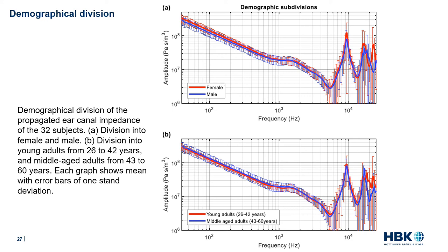Next, the 32 propagated impedance measurements are demographically divided into female and male groups, and for each group the mean and standard deviation are calculated, shown in graph A. Similarly, a demographic division into two age groups — young adults from 26 to 42 years and middle-aged adults from 43 to 60 years — is shown in graph B. The mean of the female group is within one standard deviation of the male group and vice versa. The mean of the young adult group is within one standard deviation of the middle-aged group and vice versa. Therefore, no statistically significant difference in ear canal impedance between female and male, or between young and middle-aged adults, can be concluded based on the 32 subjects. However, a slight tendency of higher impedance can be observed for females as well as for middle-aged adults at lower frequencies.